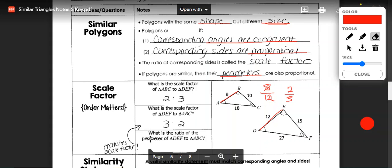The ratio of the perimeter of DEF and ABC would be the same 3 to 2.